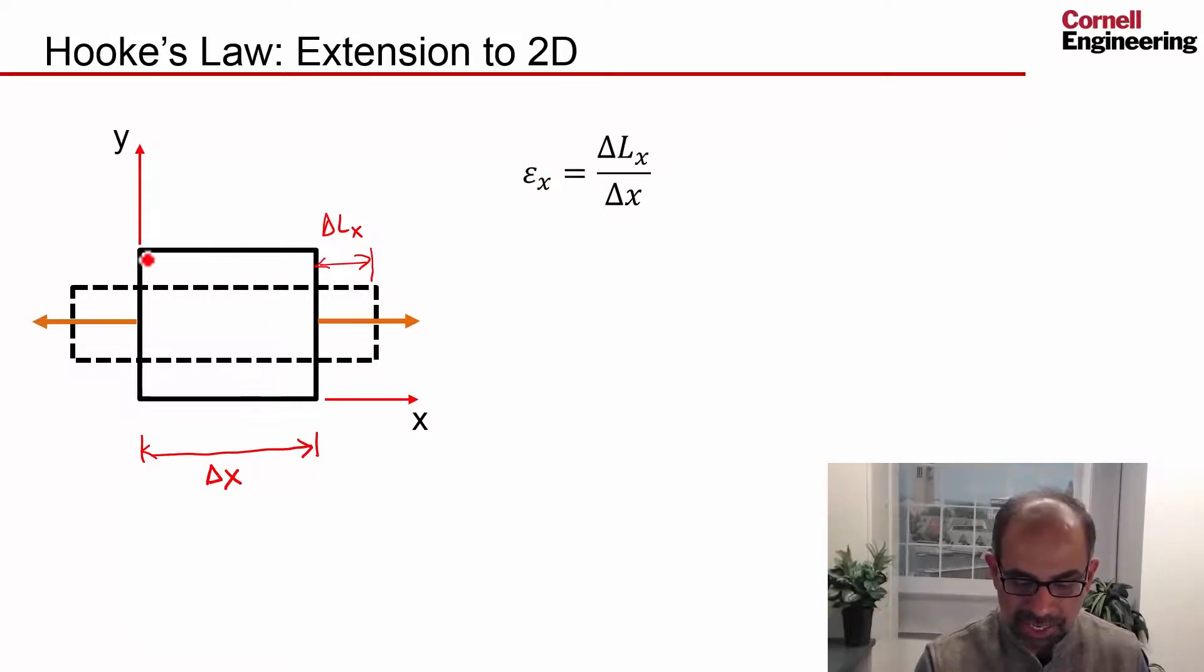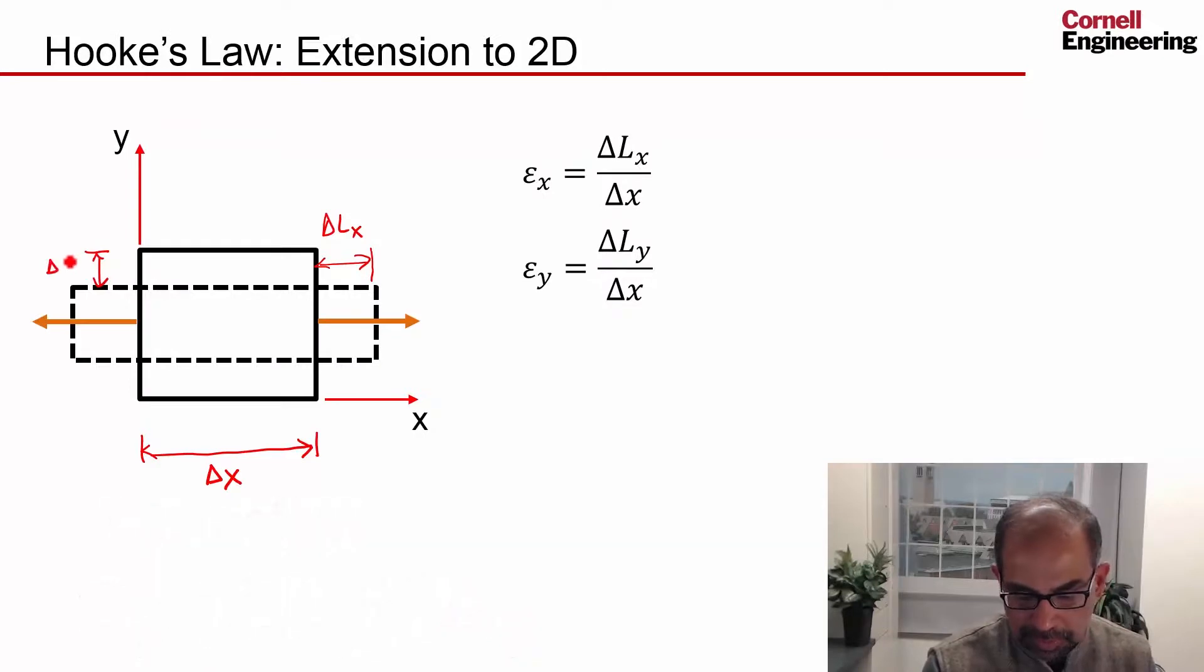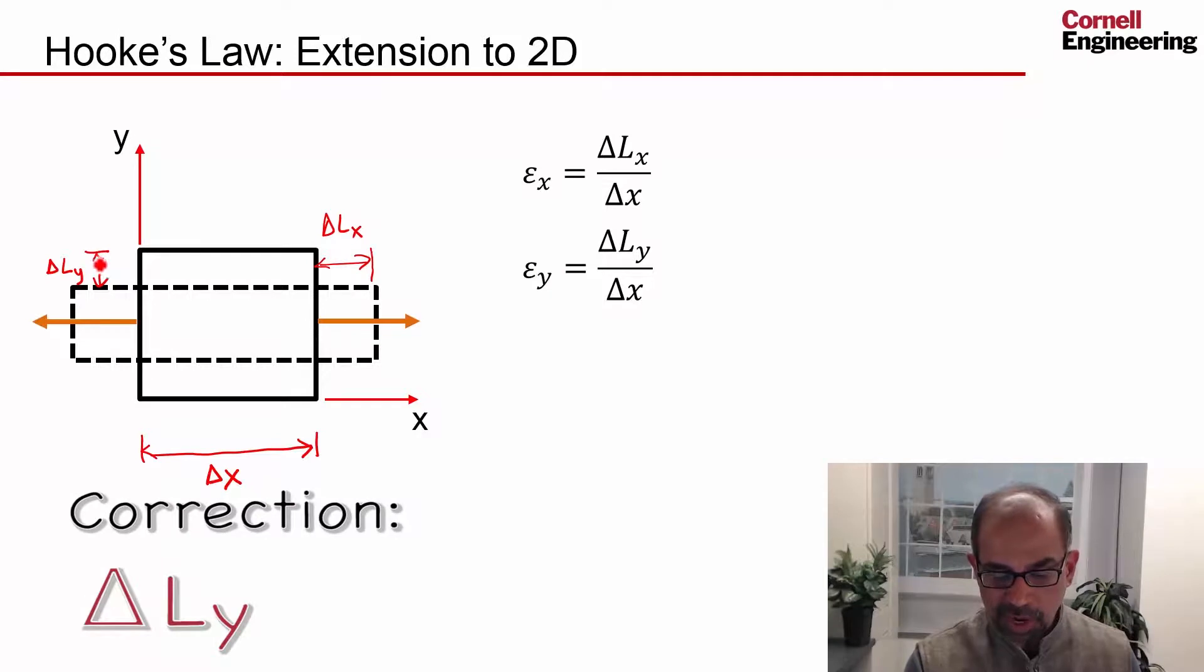But I also have a strain in the Y direction, a normal strain that's given by this change in length. So if that is delta L_Y, that gives me the normal strain in the Y direction. And delta Y is a decrease in length. So delta Y is negative, and so this strain is negative.